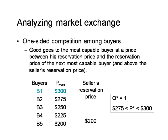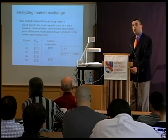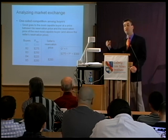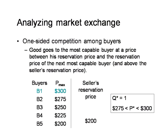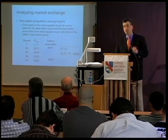A slightly more complicated case: suppose there is one radio available for sale and five potential buyers, B1 through B5, each with a different reservation price. The first buyer values the radio at as much as $300, the second at as much as $275, and so on. We can say the good will go to the most capable buyer — the buyer with the highest reservation price and greatest willingness to pay — at a price between his reservation price and the reservation price of the next most capable buyer, assuming those are above the seller's reservation price.